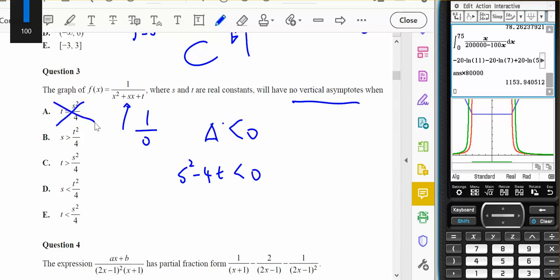Well I'm not going to have the equals. So I want minus four t to be less than negative s squared. Four t to be bigger than positive s squared. T to be bigger than s squared on four. And I'm liking C.